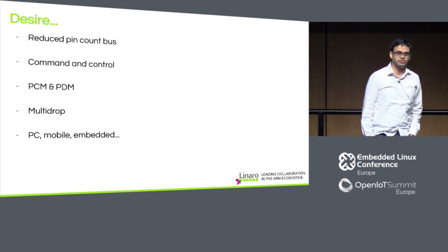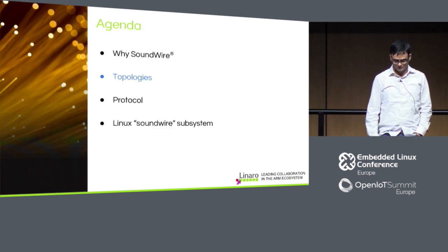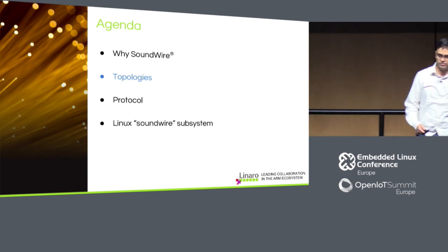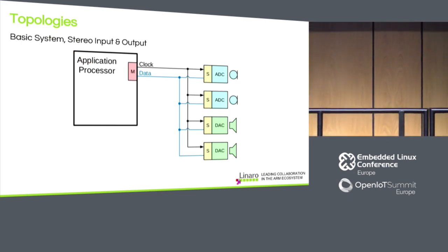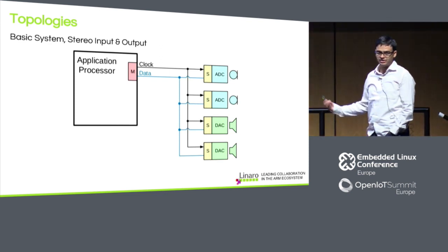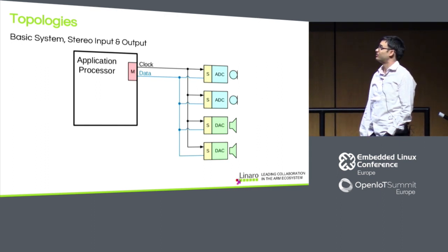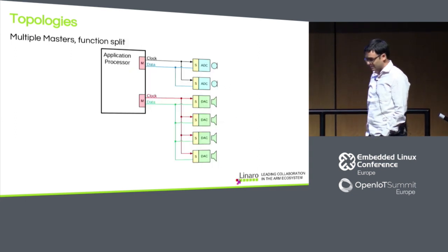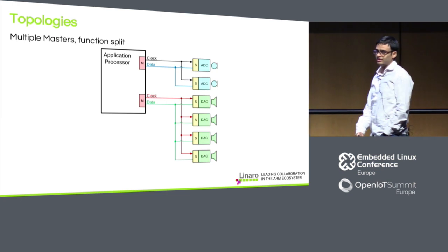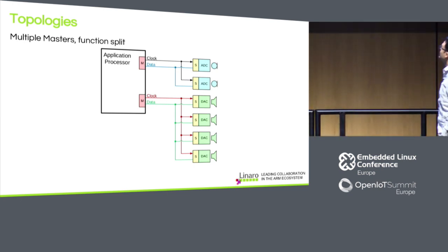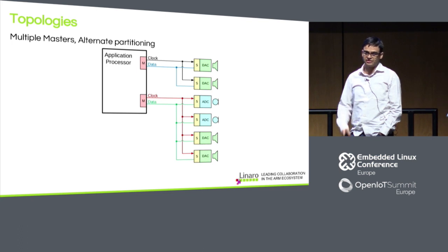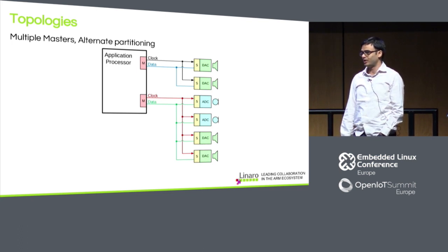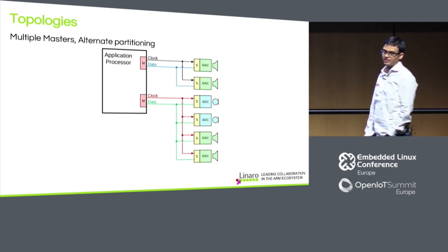SoundWare also aims to solve the problem not just for embedded or mobile but for PCs as well. The basic topology starts with a simple case: a master on the application processor driving codecs — speakers, amplifiers, microphones, and so forth. You can then have additional masters split into different functions, like having all rendering devices on one master and capture on another, or a simple dumb codec for a wired headset and another smart digital speaker.